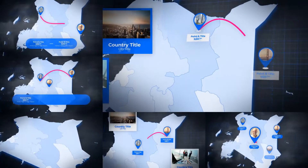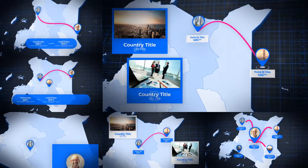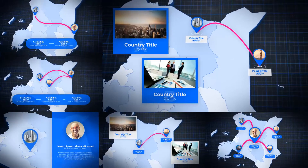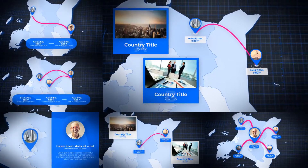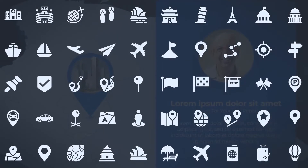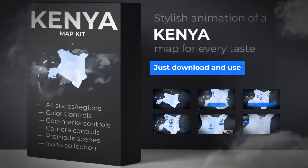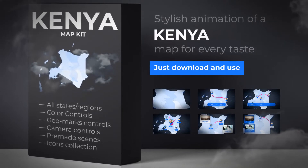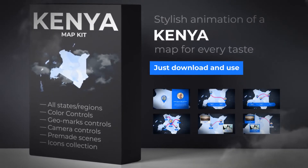The project contains seven pre-prepared scenes. The template includes a collection of markers and images for maps. So just download the template right now and add a map to your project.